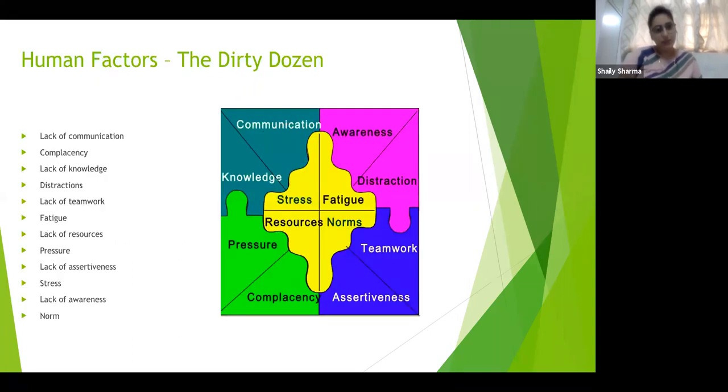These are the 12 clues which are known as dirty dozen: lack of communication, complacency, lack of knowledge, distractions, lack of teamwork, fatigue, lack of resources, pressure, lack of assertiveness, stress, lack of awareness and norms. So these are the 12 clues given by dirty dozen to study this human factor more nicely. Now we'll see in detail what these factors are and how they can affect the science of study of human. This is not only physical science, this is also mental and physical activities of human.